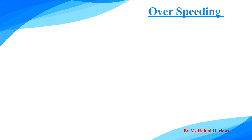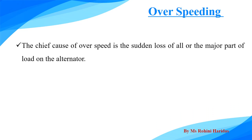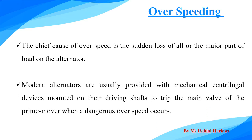And the last abnormal condition is the overspeeding. The chief cause of the overspeed is the sudden loss of all or the major part of the load on the alternator. The modern alternators are usually provided with mechanical centrifugal devices mounted on their driving shaft to trip the main valve of the prime mover when dangerous overspeed occurs.